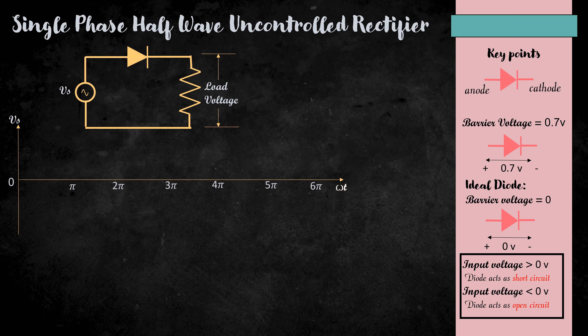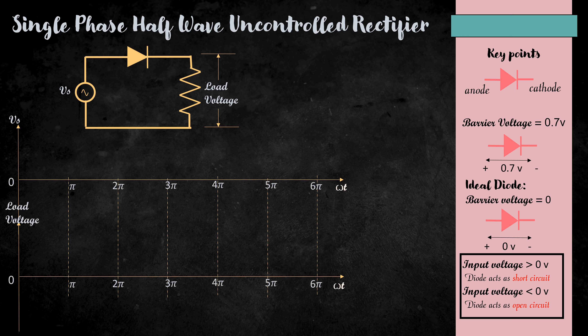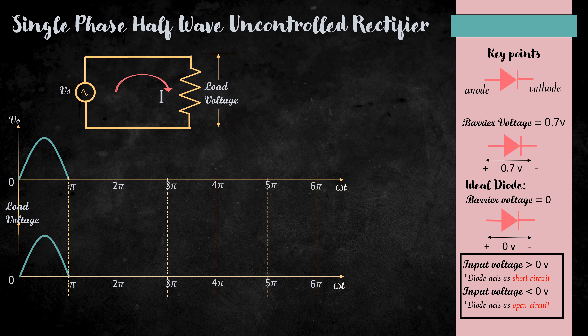Now, let's see the input and output waveform. First, let's consider the input from 0 to π. Here, the input voltage Vs is greater than 0. Therefore, the diode acts as a short circuit, and the current I flows through it. Here, the load is connected parallel to the supply voltage. We know that in a parallel circuit, the voltage remains the same. Therefore, the load voltage will be the same as the supply voltage.